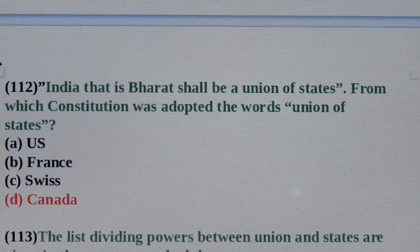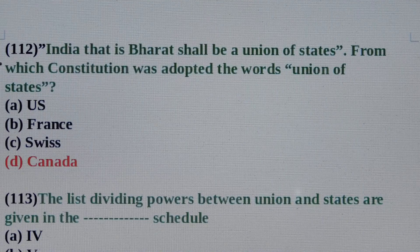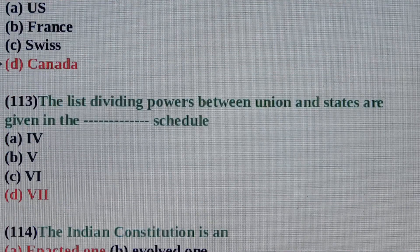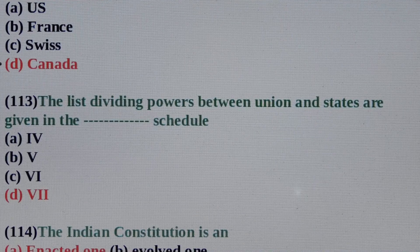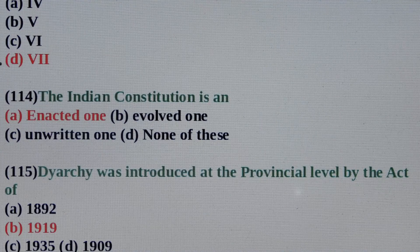Question No. 112: India, that is Bharat, shall be a Union of States. From which constitution were the words 'Union of States' adopted? Answer is Option D: Canada. Question No. 113: The list dividing powers between Union and States is given in the Dash Schedule. Answer is Option D: Seventh Schedule. Question No. 114: The Indian constitution is an? Answer is Option A: Enacted one.